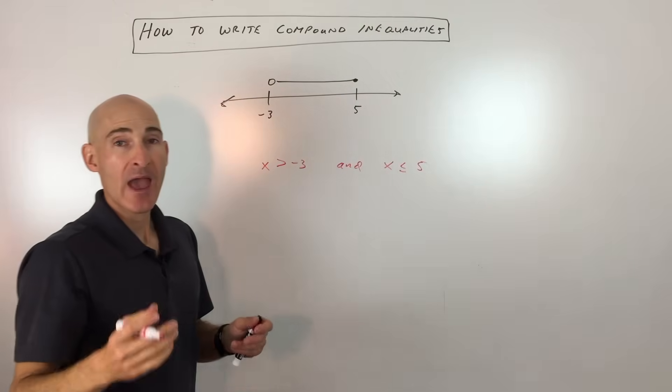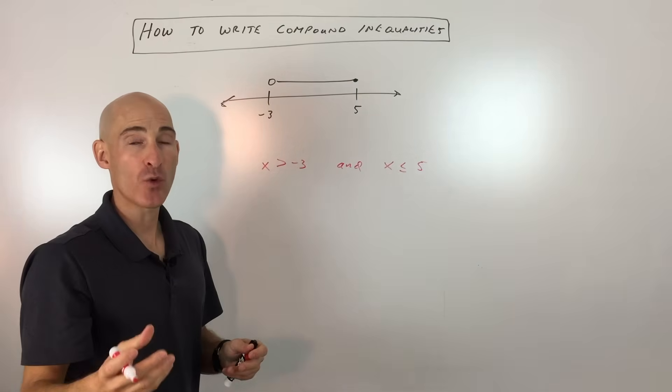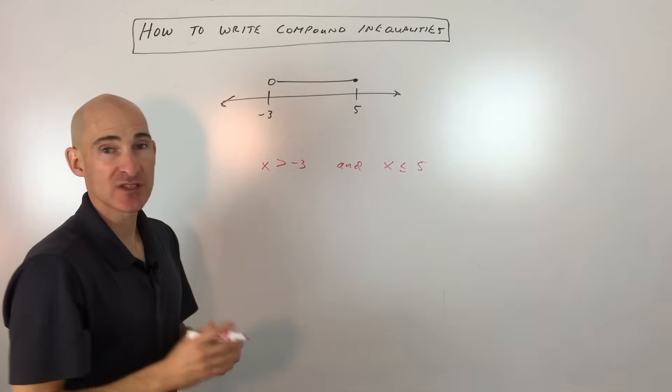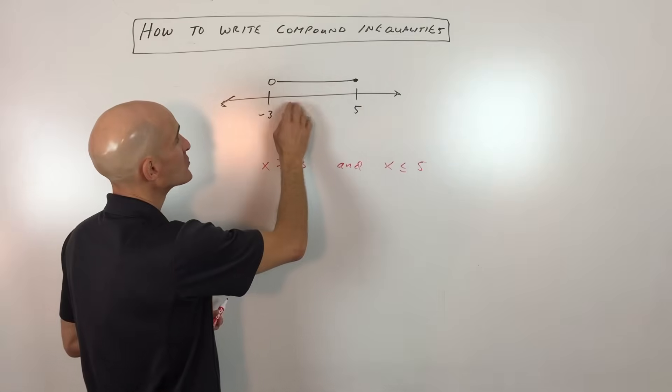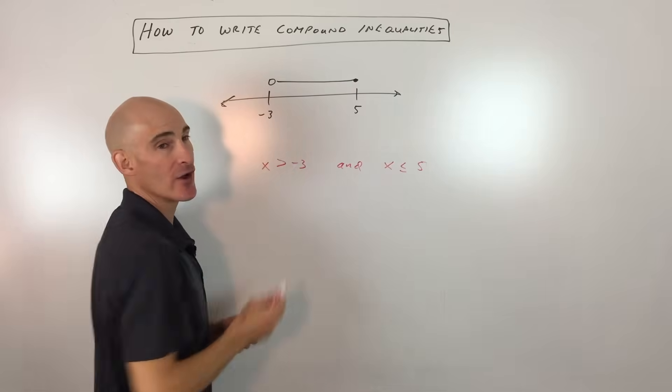Now when you have a compound inequality, what you can do is you can write these together as one inequality. This occurs when the values are in between two numbers. So it's the set of all points in between these two values.